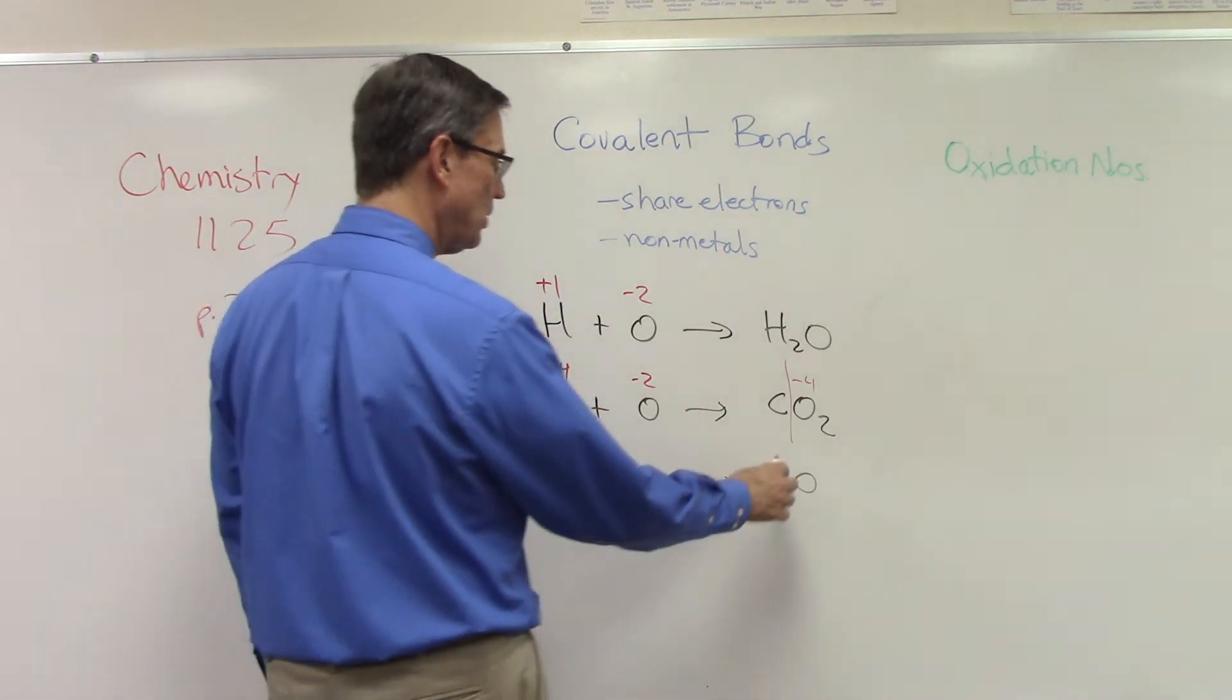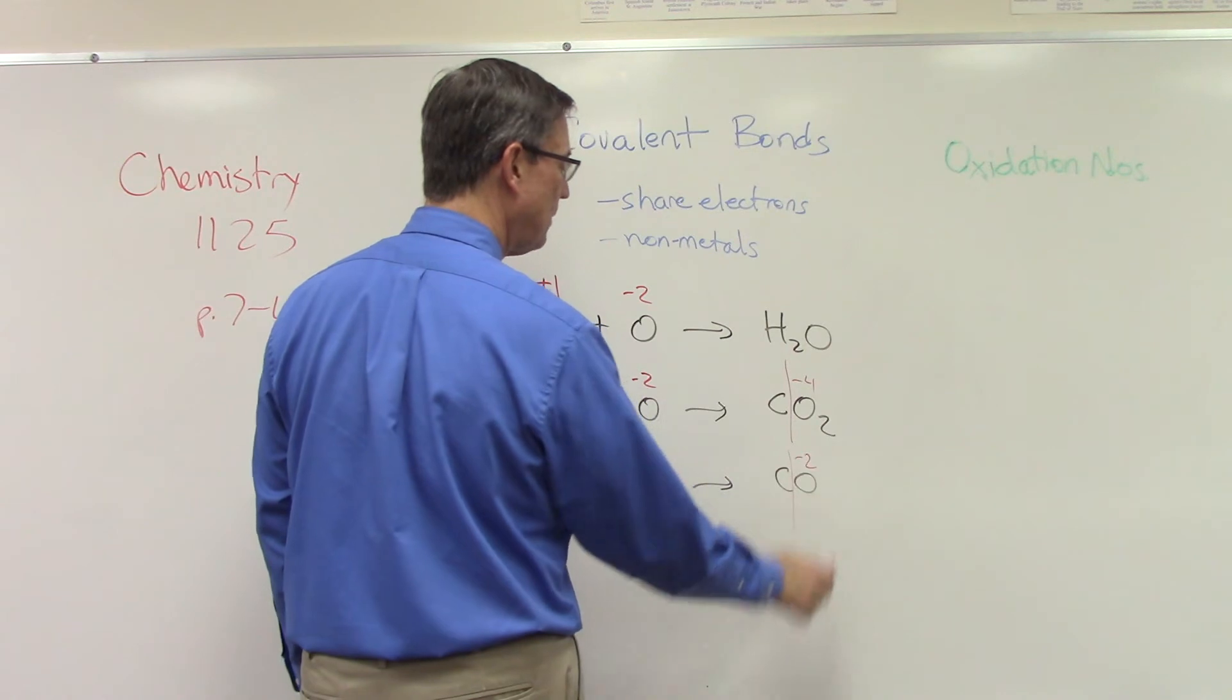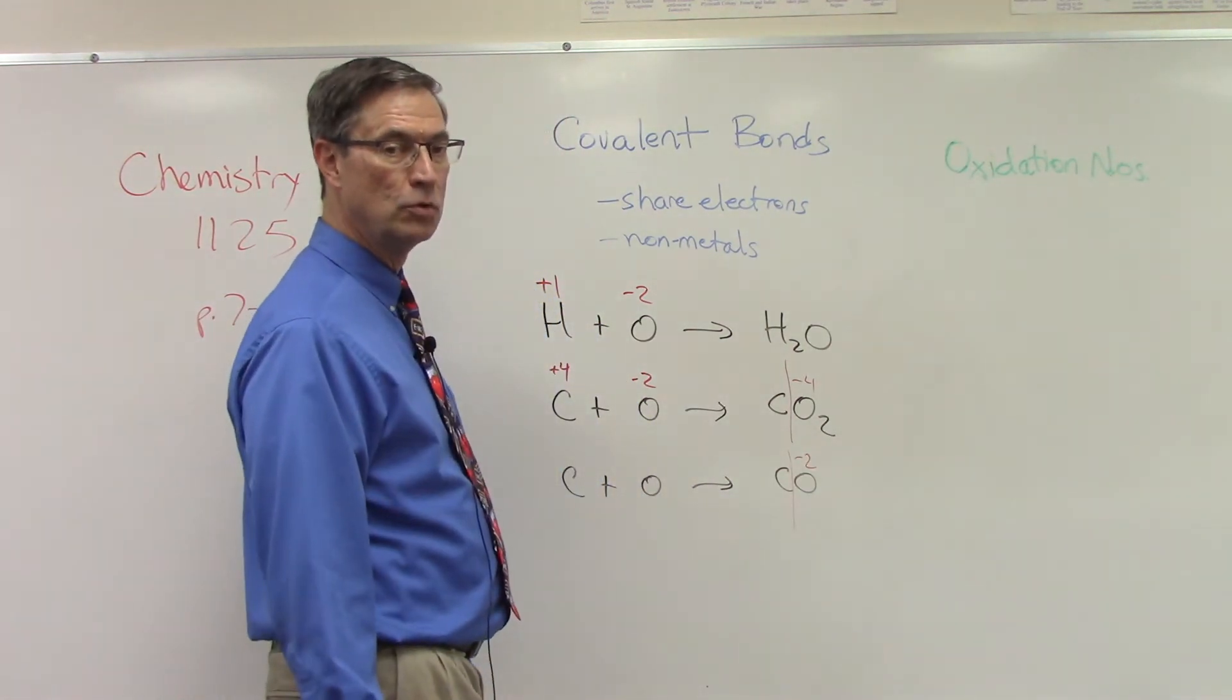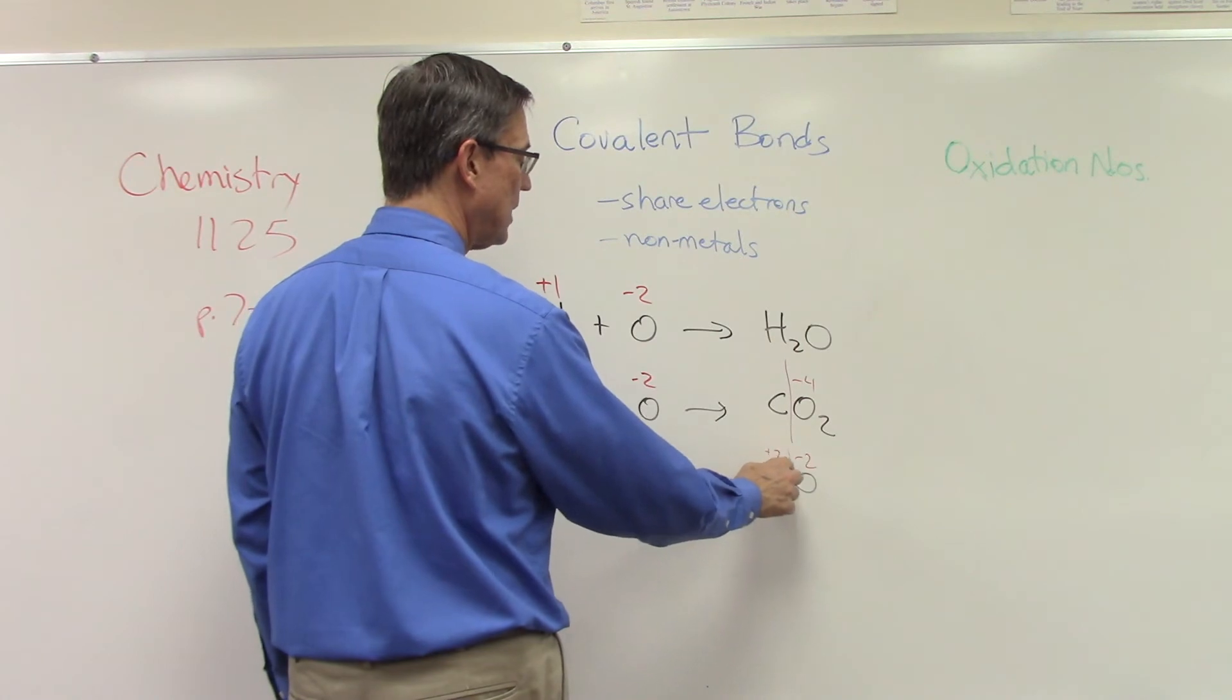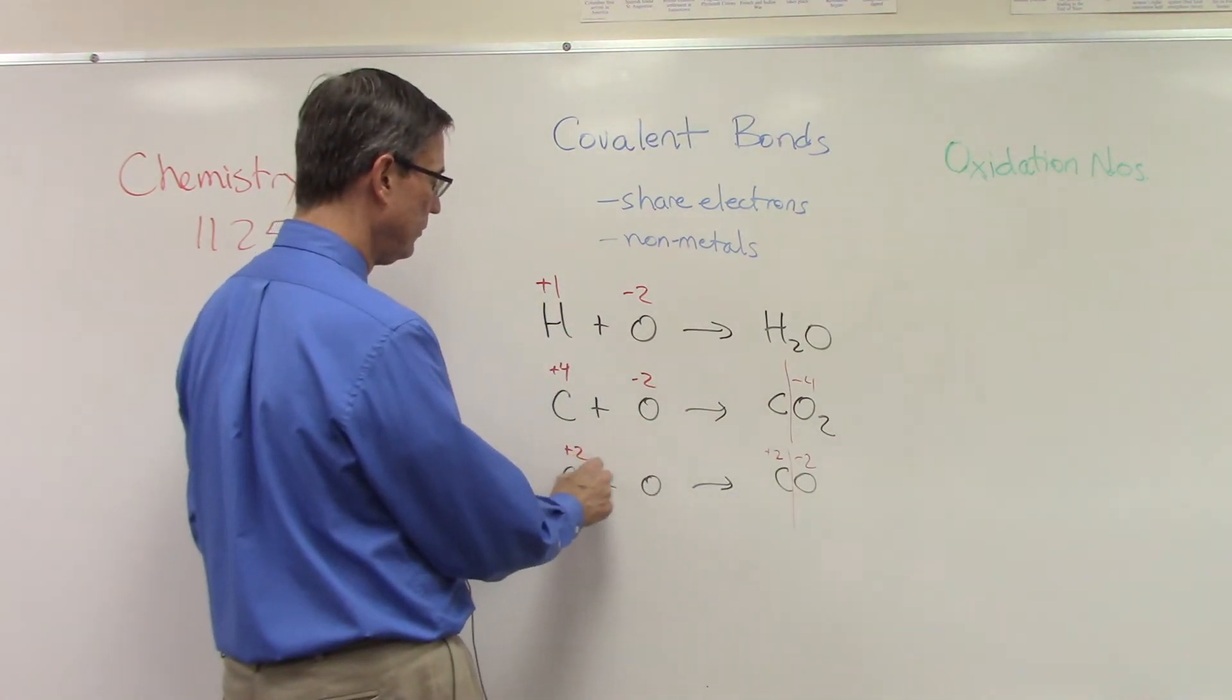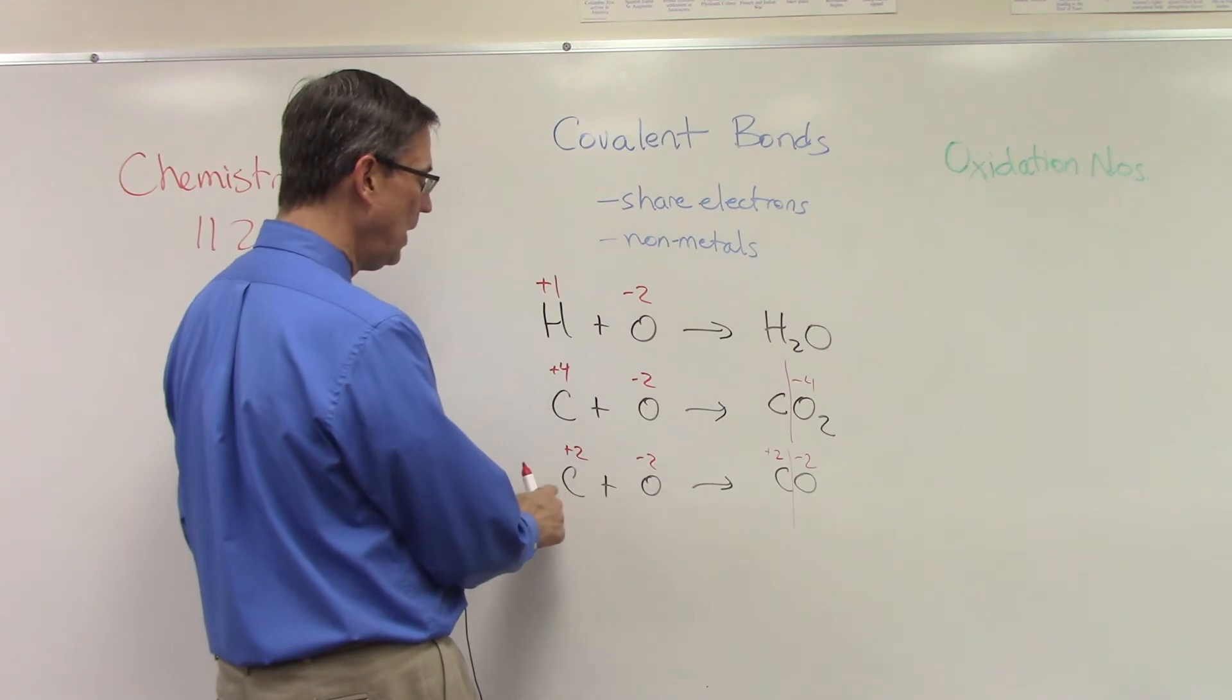Carbon monoxide. Well, let's draw a line here. We know oxygen has to positively must absolutely be negative two. So what does that mean? Carbon has to be, in this case, it has to be positive two.